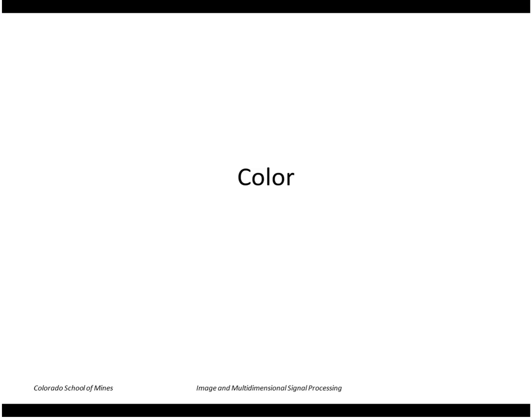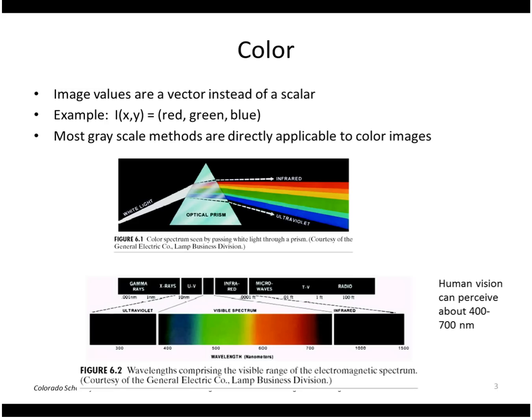I'm going to talk about color images. Color is the case where we have a vector for the image values instead of a scalar. Commonly it would be expressed in terms of red, green, blue components — so three values in each pixel instead of one.